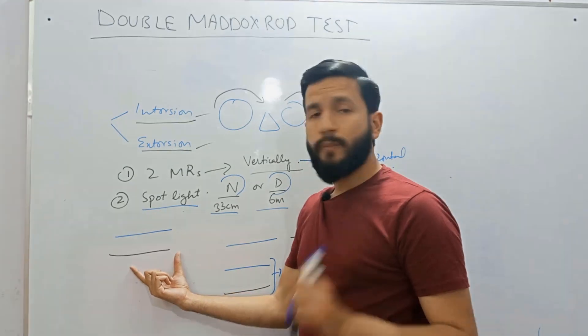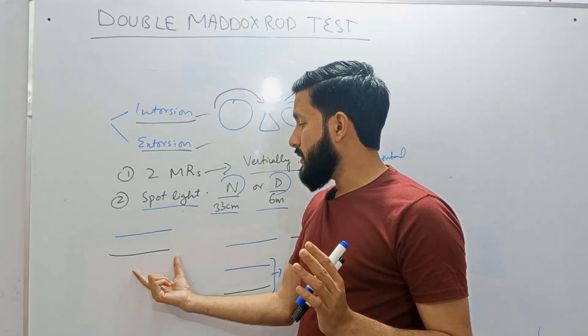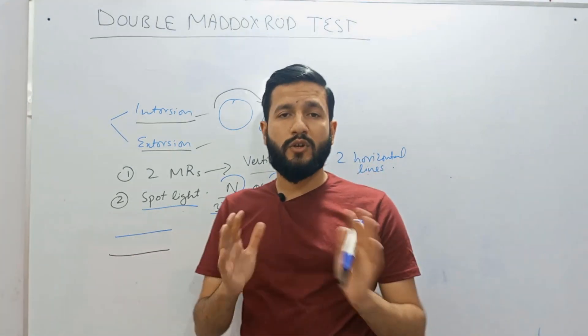So if two parallel lines are seen without rotating the Maddox rod then it will indicate that there is no cyclotorsion present.